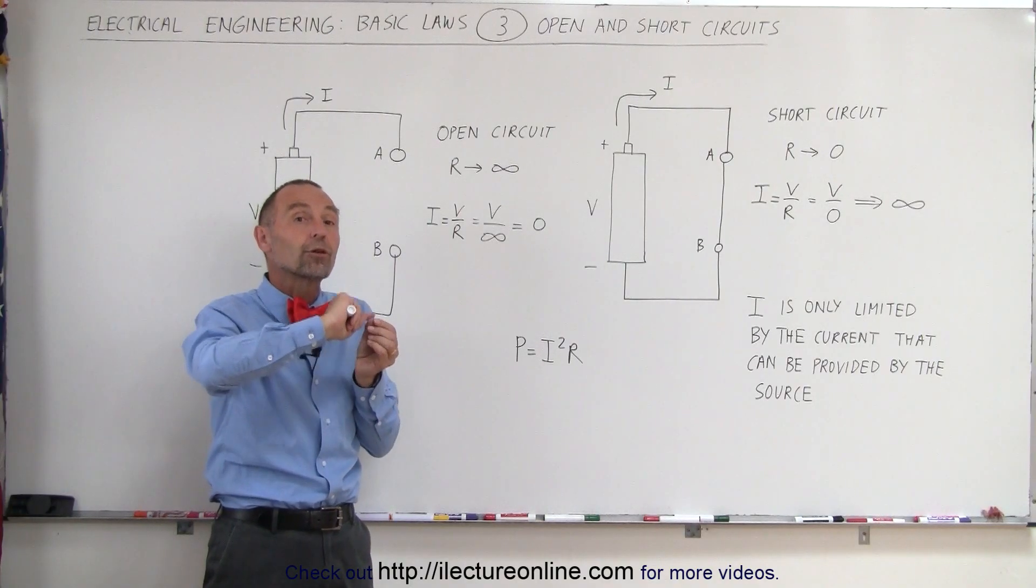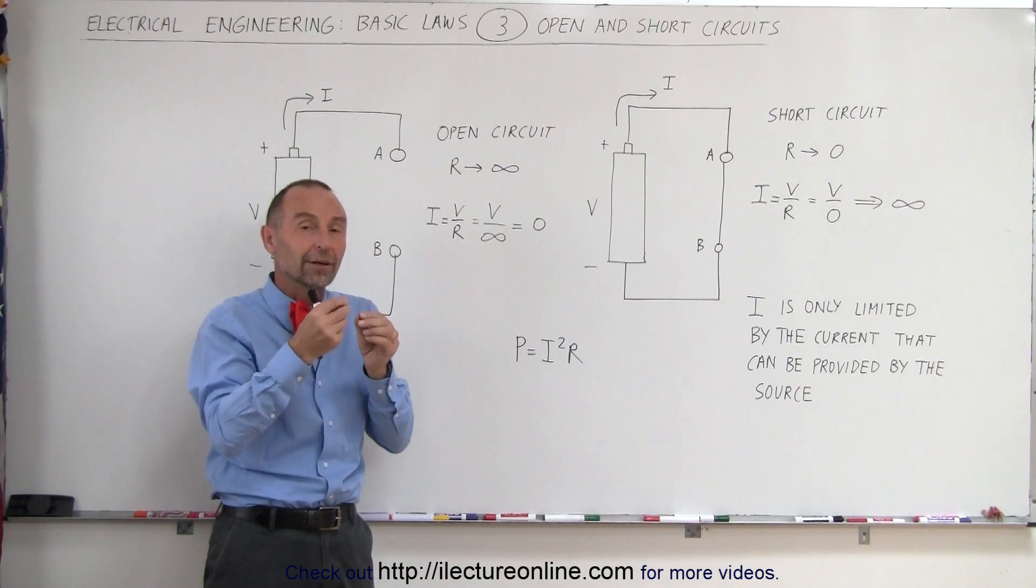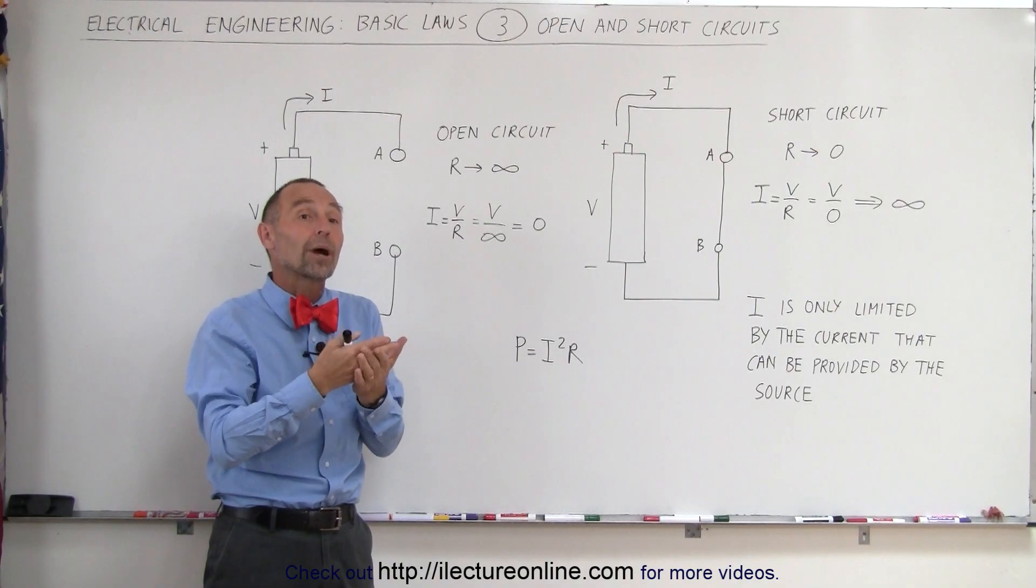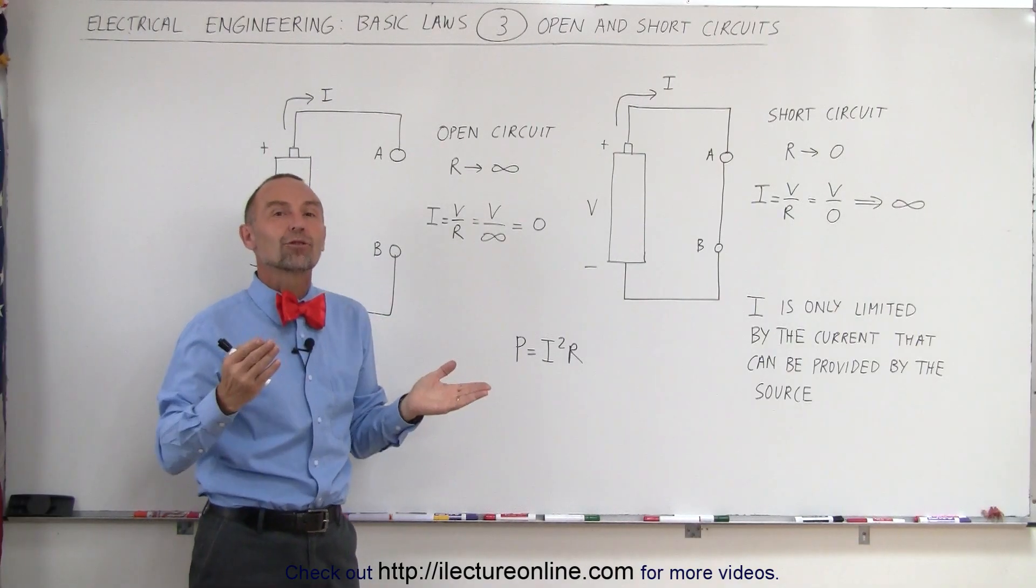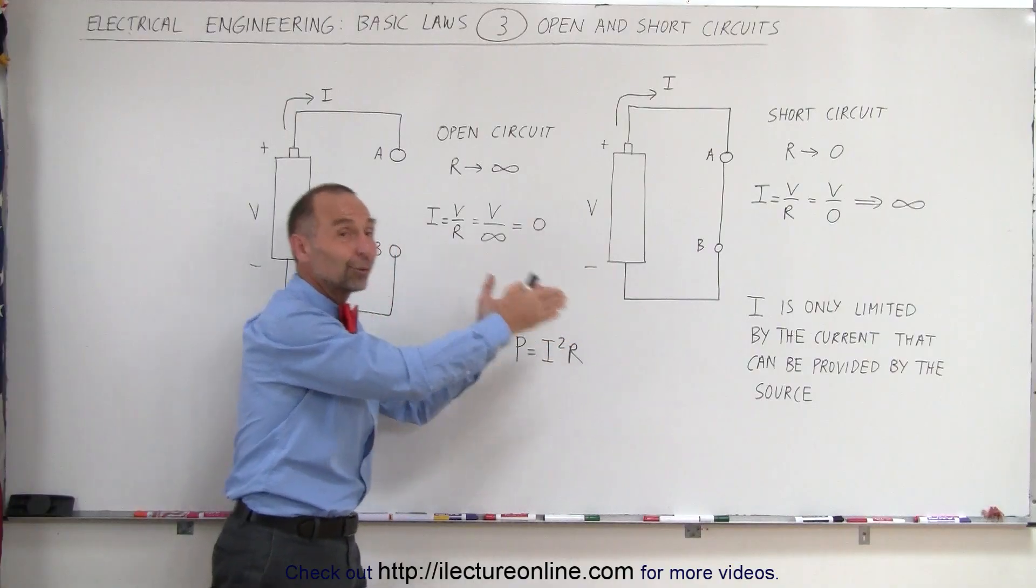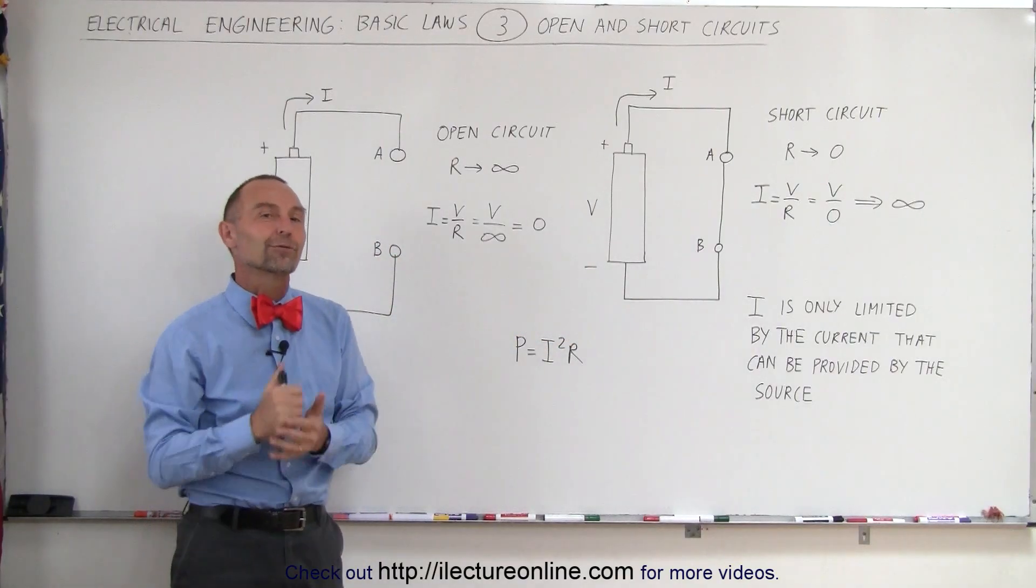If too much current flows through that wire, which tends to be a very small, thin wire, the additional heat in the wire will simply break it and open the circuit. Then we go from a short circuit to an open circuit, and it stops the current from flowing.